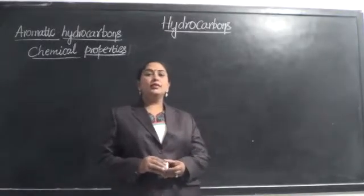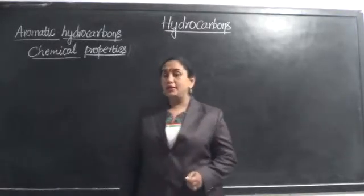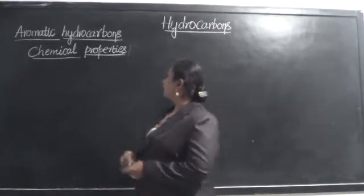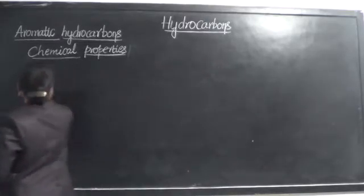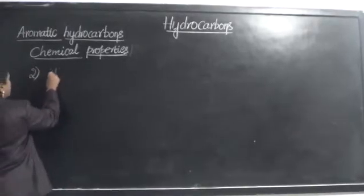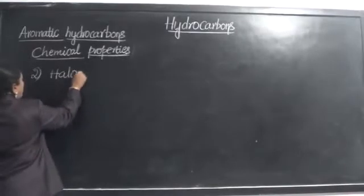In this video, let us continue to learn the chemical properties of the aromatic hydrocarbons from the lesson of hydrocarbons. Now, the second chemical property that we are going to discuss is the process of halogenation.